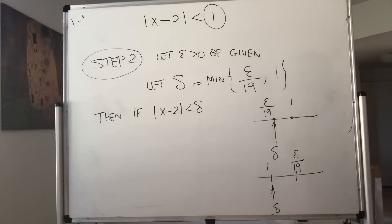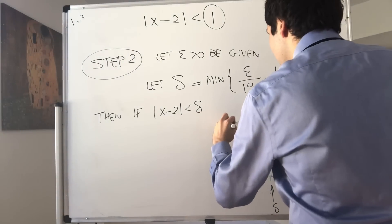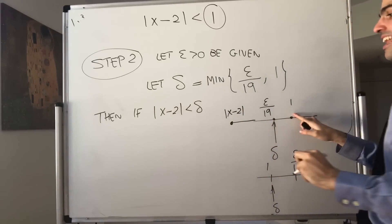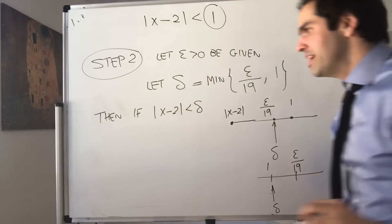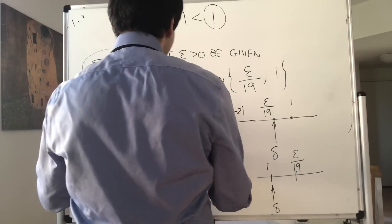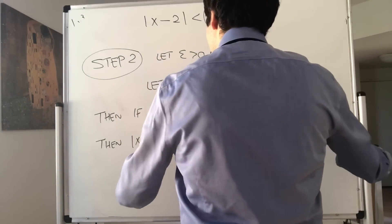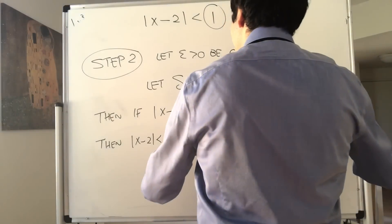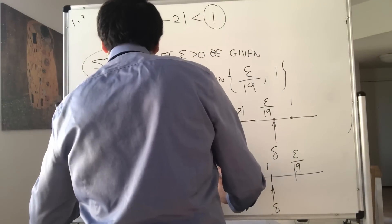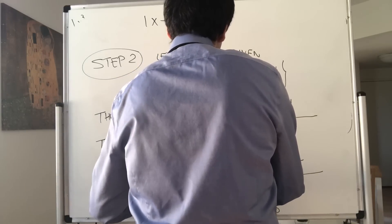What do we get? If x minus 2 is less than delta, then it is both less than epsilon over 19 and less than 1. That's why we had to choose the minimum. Then on one hand we get x minus 2 is less than 1, and remember that implied absolute value of x is less than 3, and x minus 2 is less than epsilon over 19.